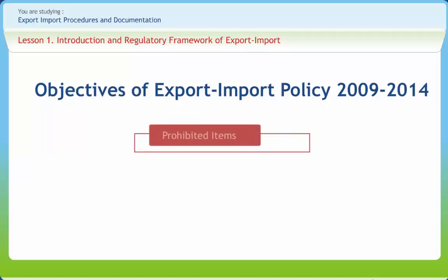Prohibited items cannot be exported or imported. These items include wildlife, exotic birds, wild flora, beef, human skeletons, tallow, fatten oils of any animal origin excluding fish oil, and wood and wood products in the form of logs, timber, stumps, roots, barks, chips, powder, flakes, dust, pulp, and charcoal.